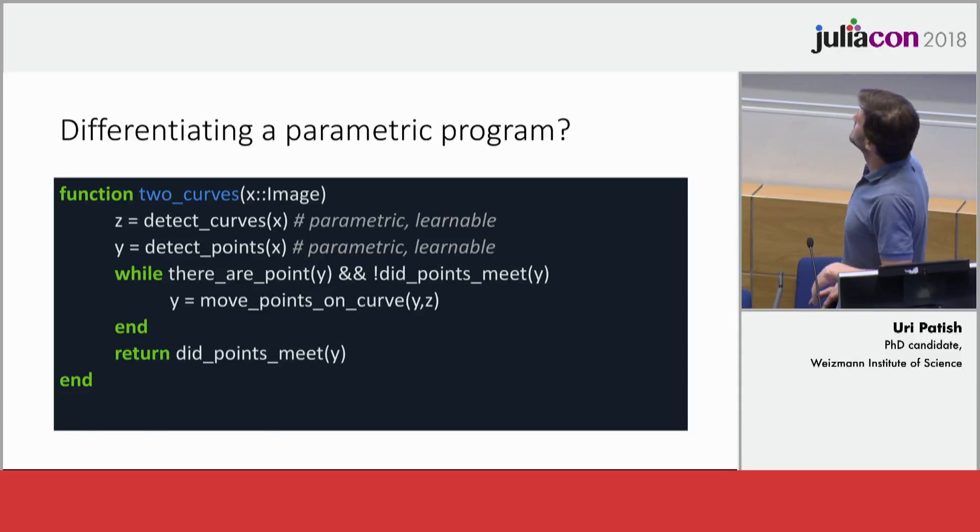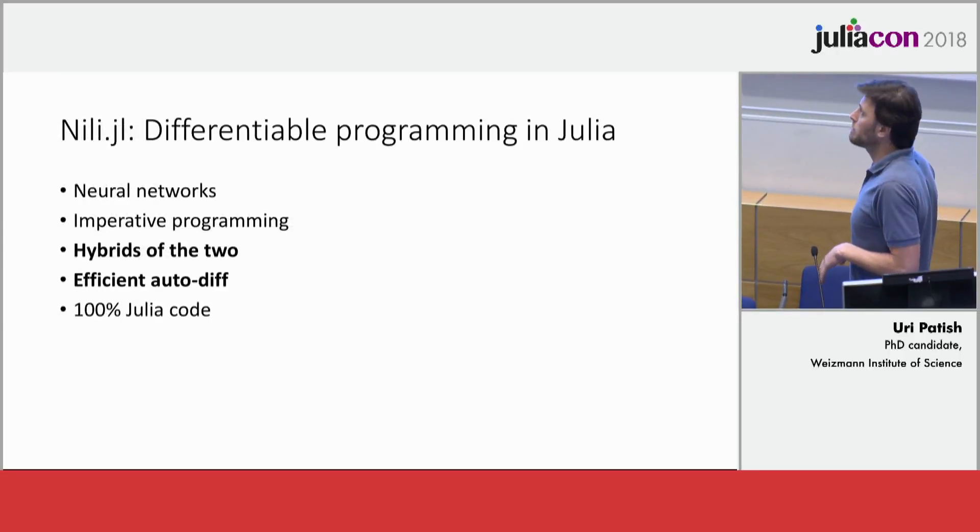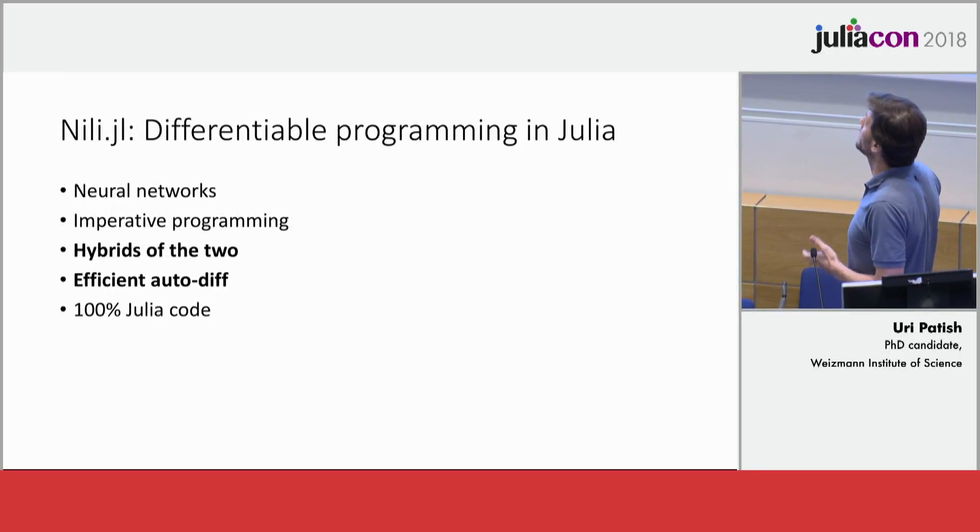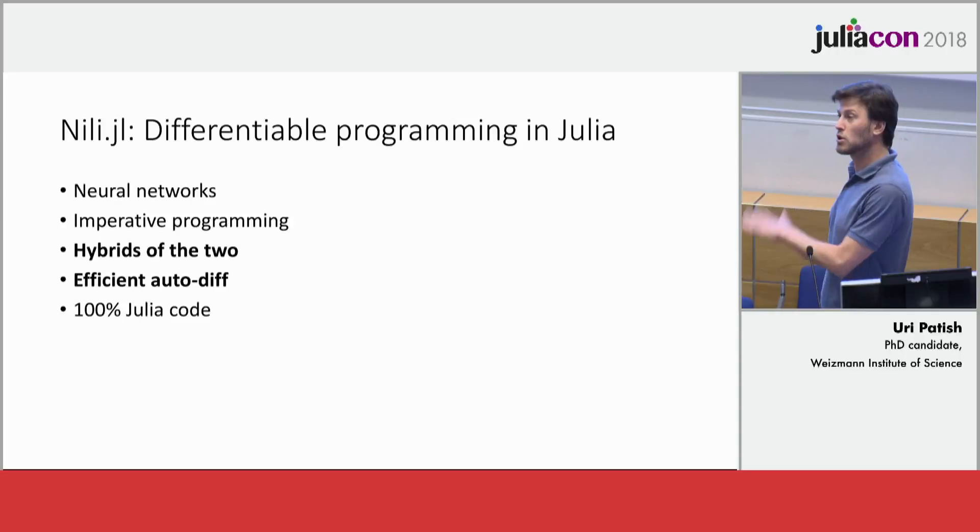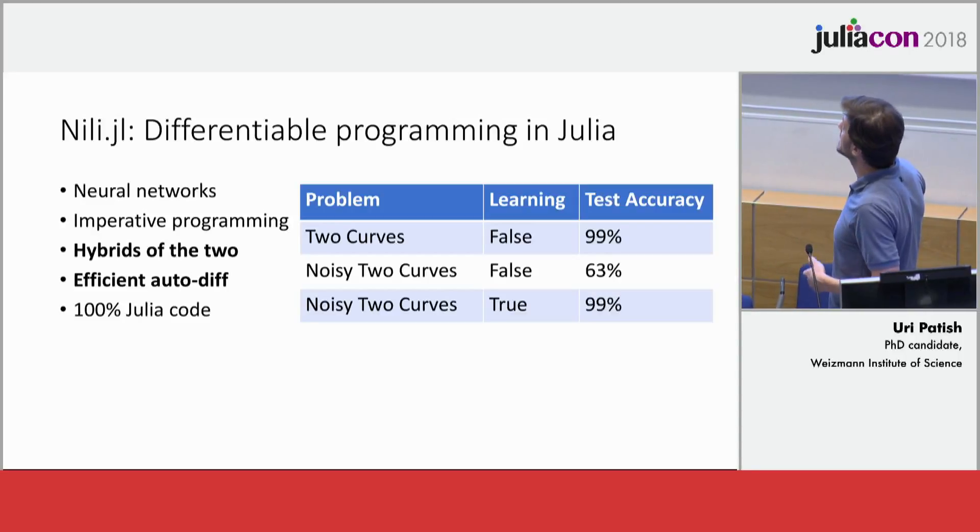Let's switch gears and see how we can do that in Julia. I've been developing a package for differentiable programming in Julia, which I call Nili. It enables you to construct standard neural networks, but you can also do standard programming tasks like writing the factorial or the two curves. Interestingly, you can do any hybrid of the two and still get efficient automatic differentiation.